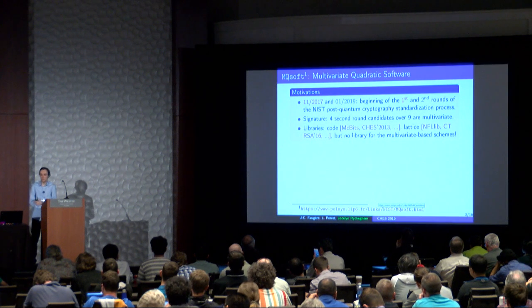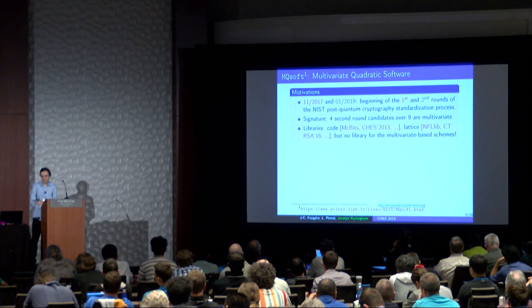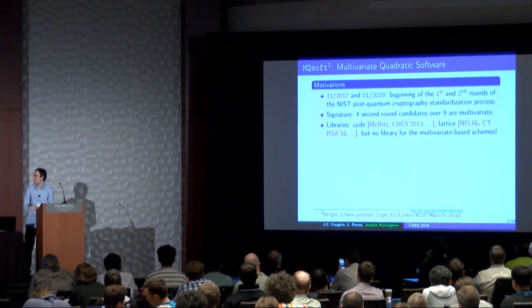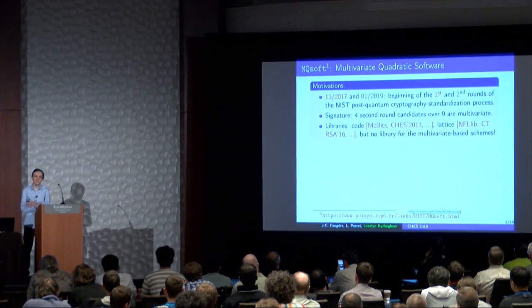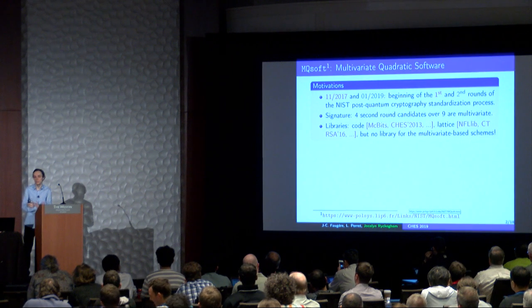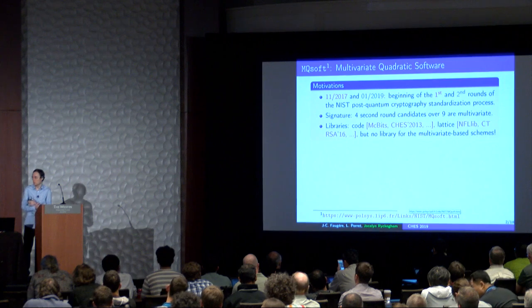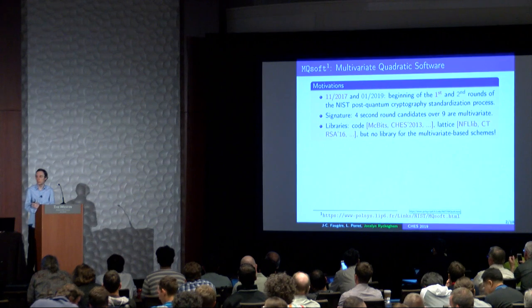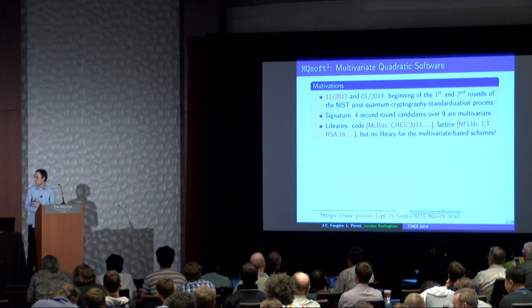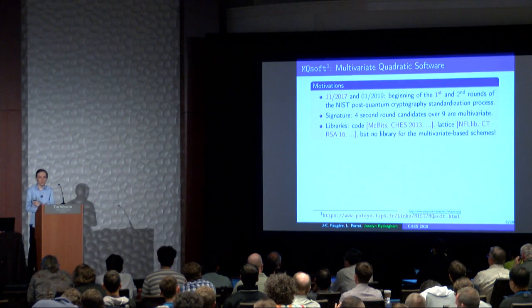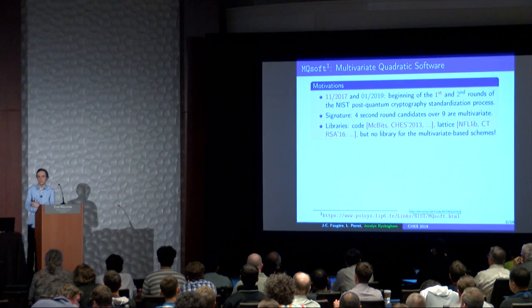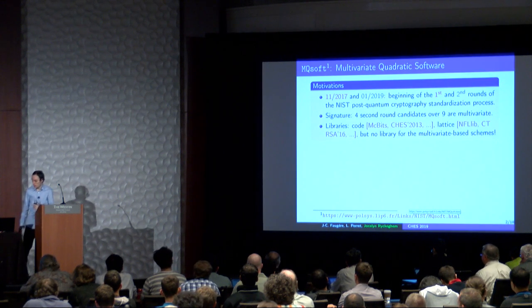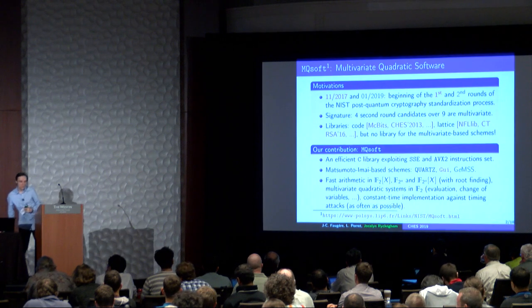NIST has begun a post-quantum cryptography standardization process at the end of 2017. There were 69 candidates, and one year after, we have only 26 candidates at the second round of the competition. In particular, four out of the nine candidates in the signature schemes are multivariate.